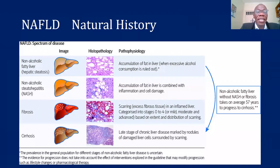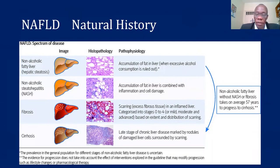Fat in the liver is certainly not benign. It starts as simple accumulation of fat in the liver, but this eventually progresses to attracting inflammatory cells into the liver, causing destruction of liver cells, eventually causing scar tissue within the liver, ending up with cirrhosis, and eventually liver cancer in some patients.